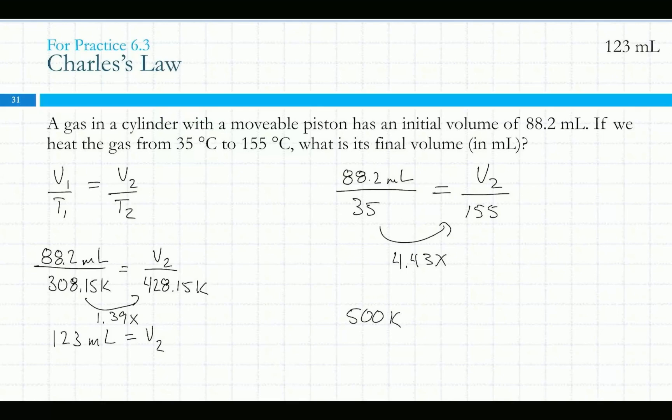This is a very reasonable change in temperature — 35 to 155 is pretty hot but it's a reasonable temperature change. But to increase by 4.43 times in Celsius is saying an ending temperature of 1,364 Kelvin — a much, much larger change would have to take place. This is why you have to use Kelvin.